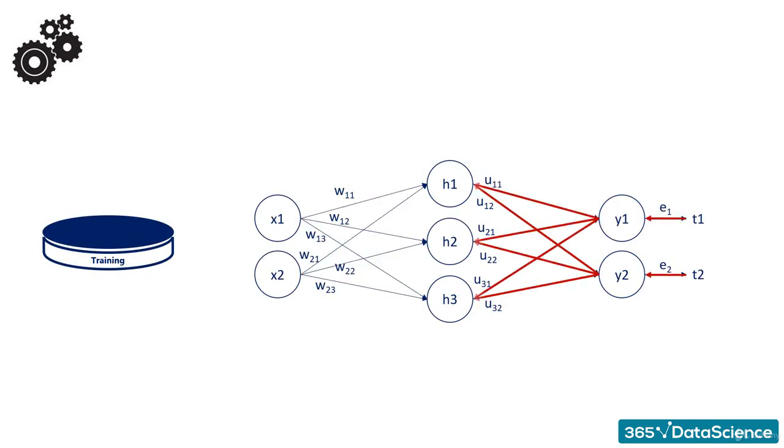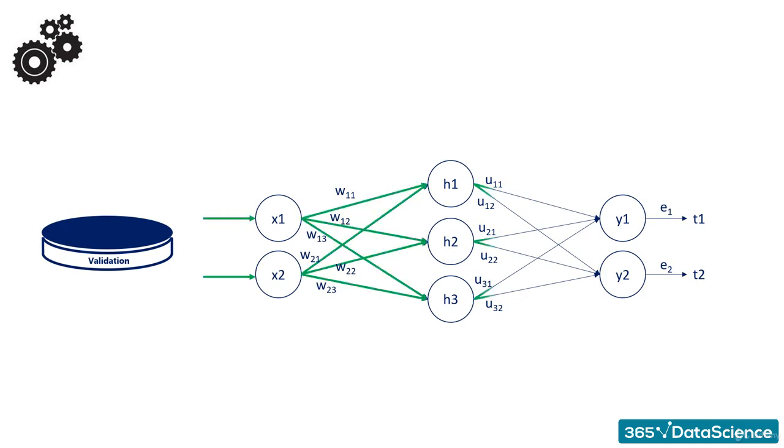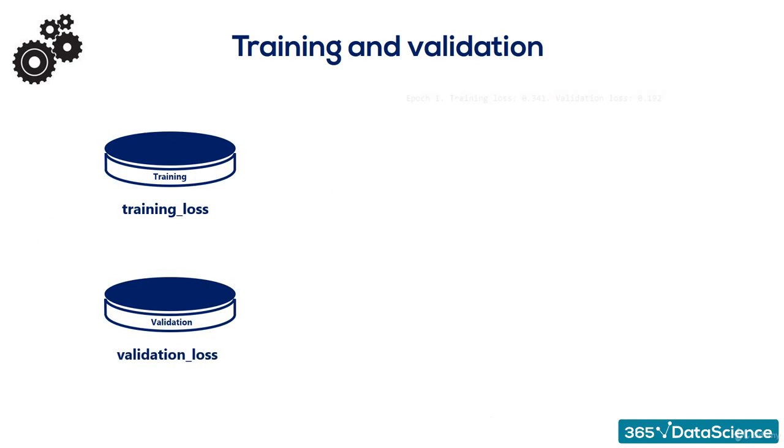Normally, we would perform this operation many times in the process of creating a good machine learning algorithm. The two loss functions we calculate are referred to as training loss and validation loss.